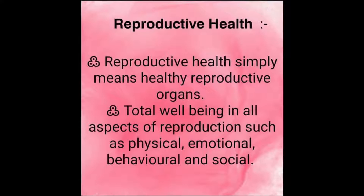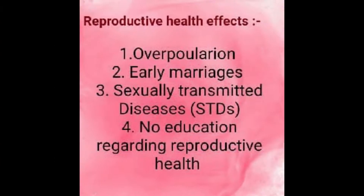Reproductive health का मतलब यह होता है कि हमारे reproductive organs एकदम healthy हों और जो भी चीज़ें उनको effect करती हैं — physically भी, emotionally भी और socially भी। अगर हम country की बात करें तो reproductive health को basically overpopulation, early marriages, और no education regarding reproductive health — यही सारी चीज़ें effect करती हैं।